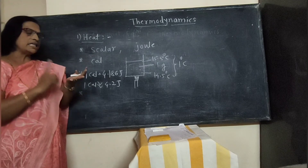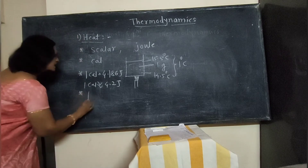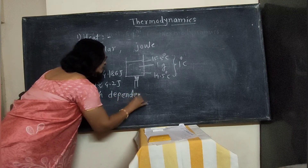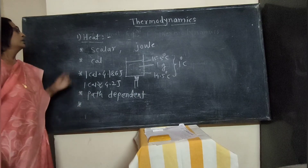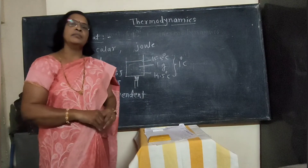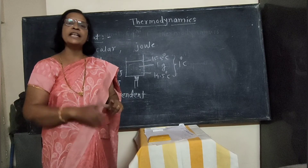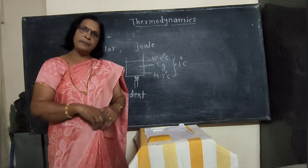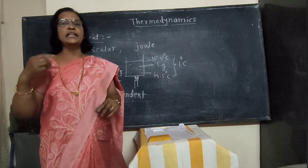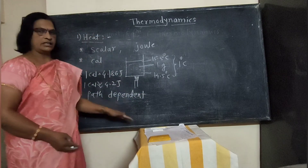In thermodynamics, three variables are there: heat, work, and internal energy. Out of these three, heat is a path dependent term. Regarding sign convention: heat absorbed by the system is always considered as positive, and if heat leaves the system, it is always considered as negative.